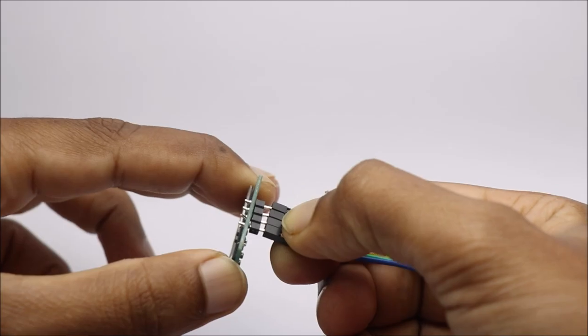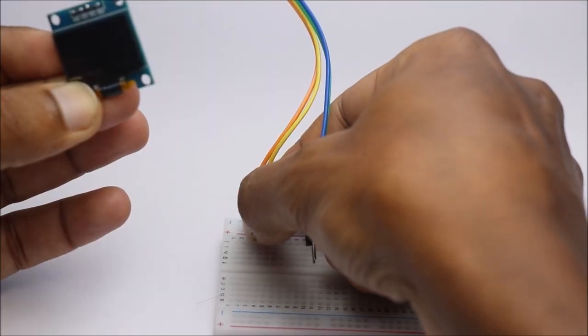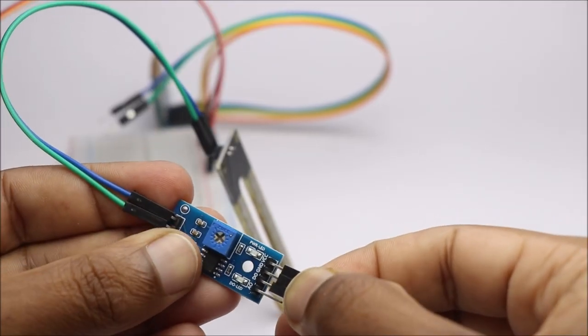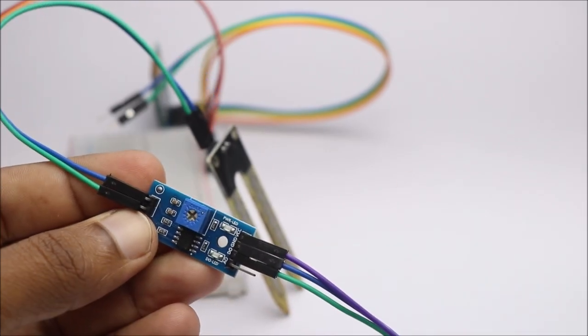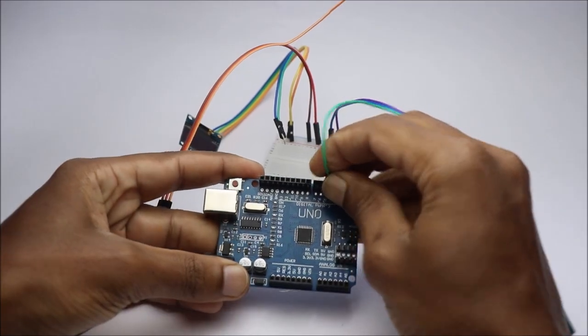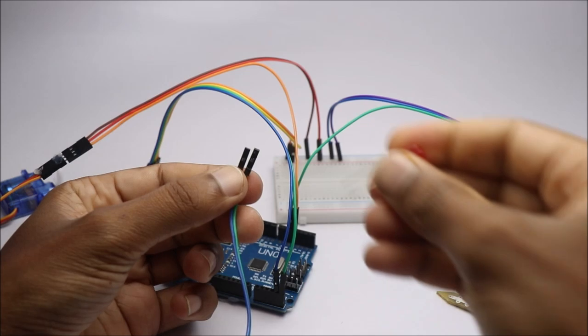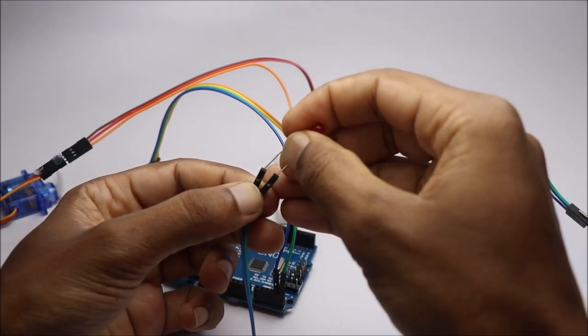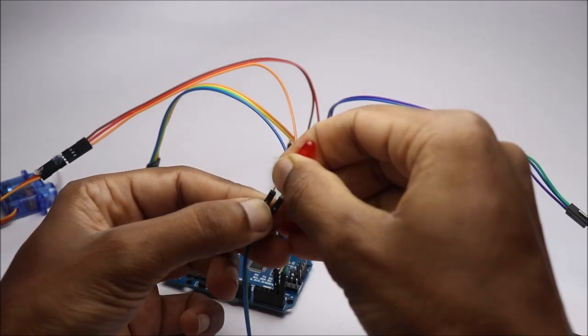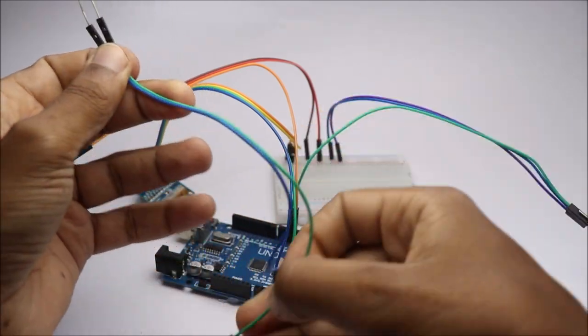To begin with, have a look at this circuit diagram. Follow these simple steps to build circuit connections. You can find the list of components used for this project in the description box below.